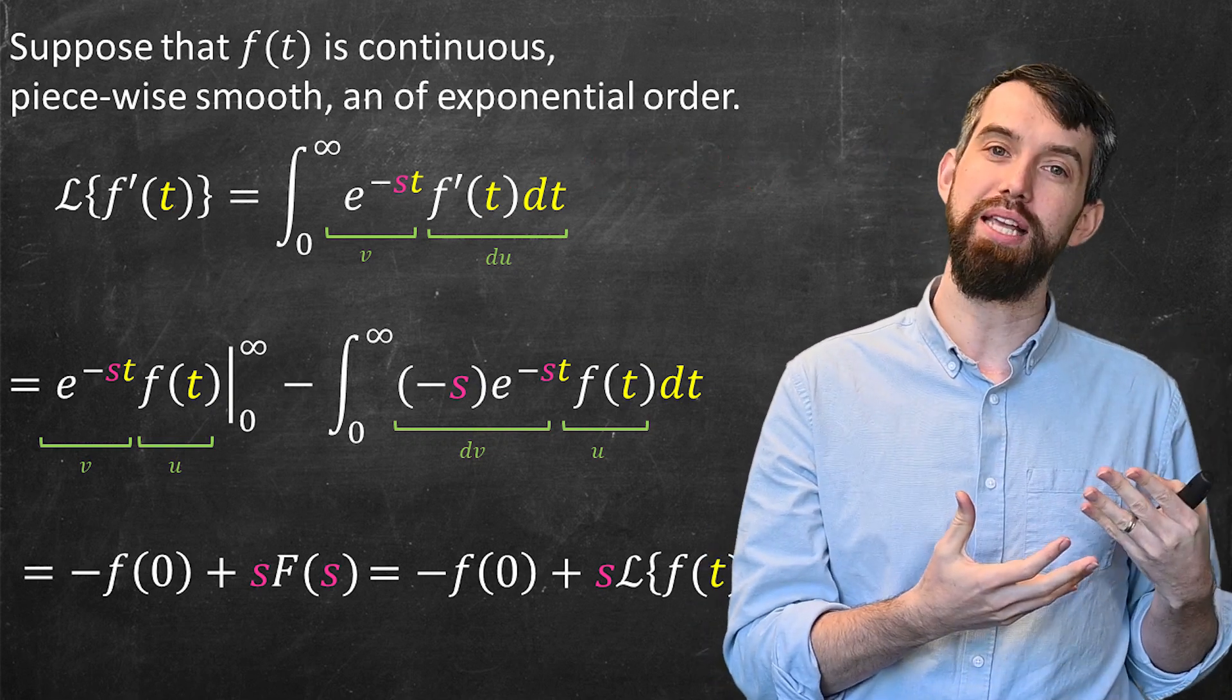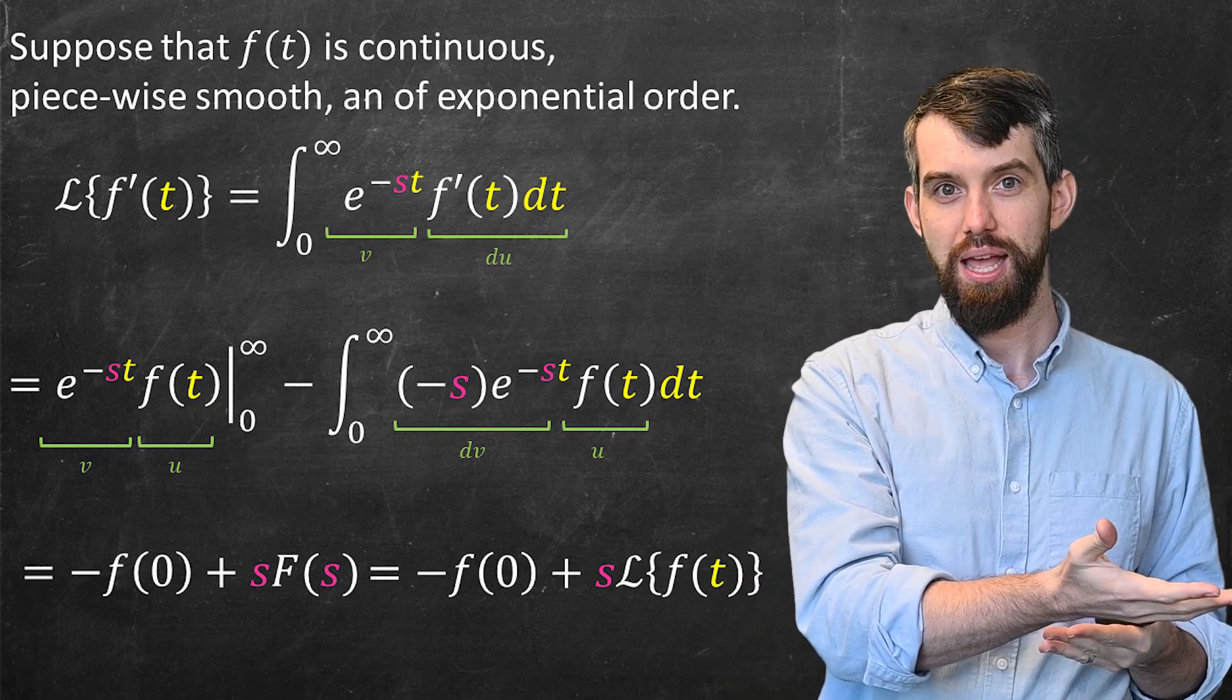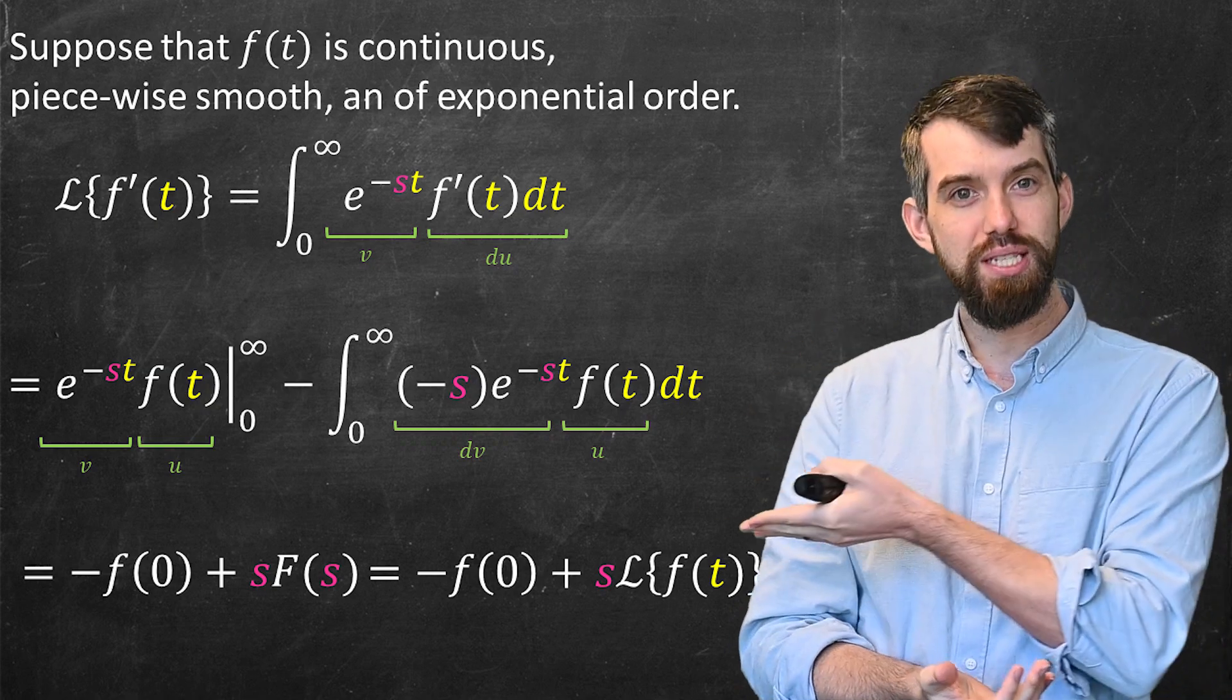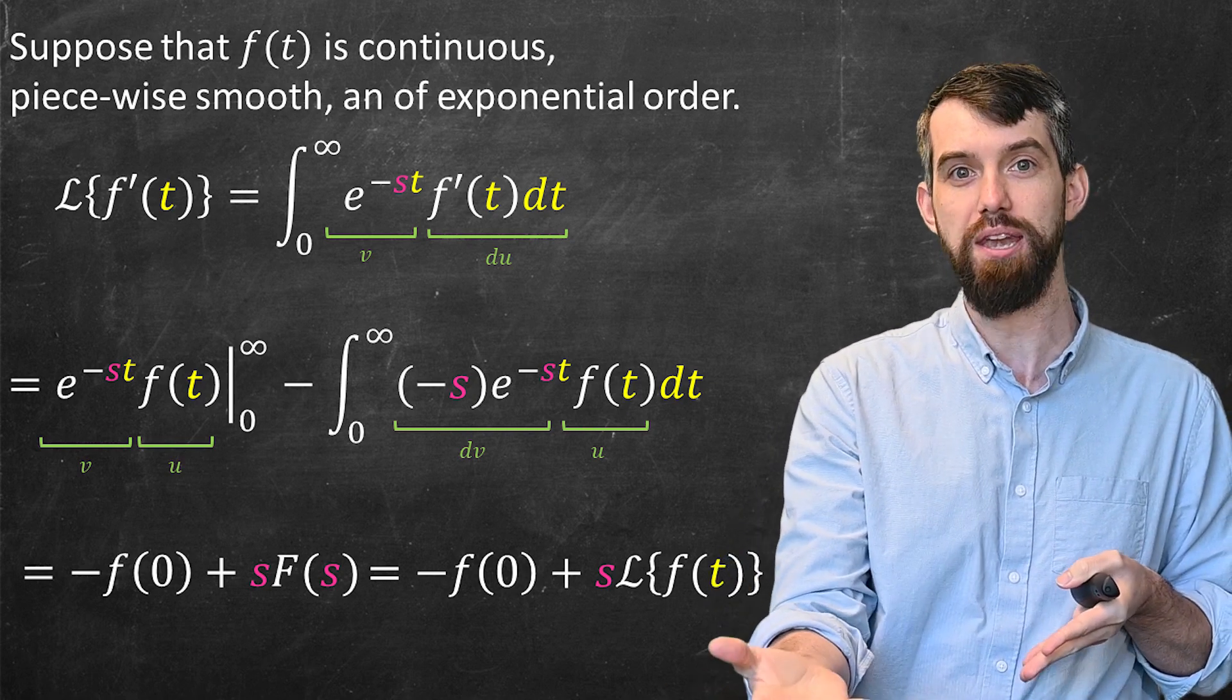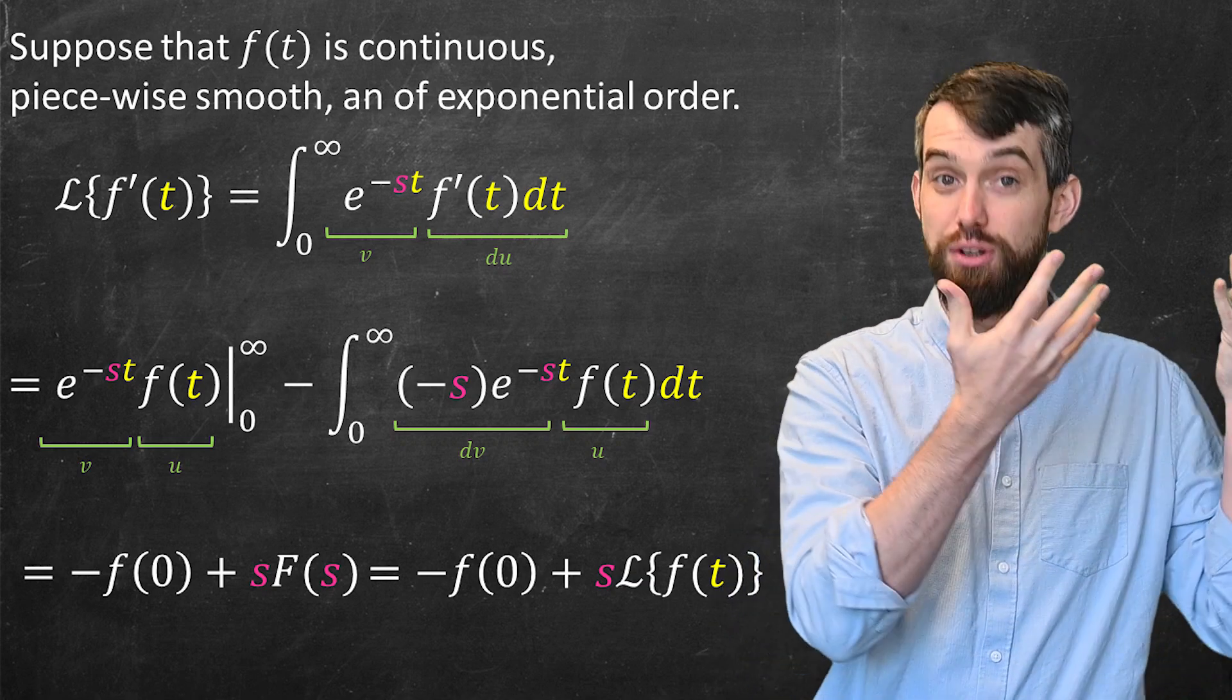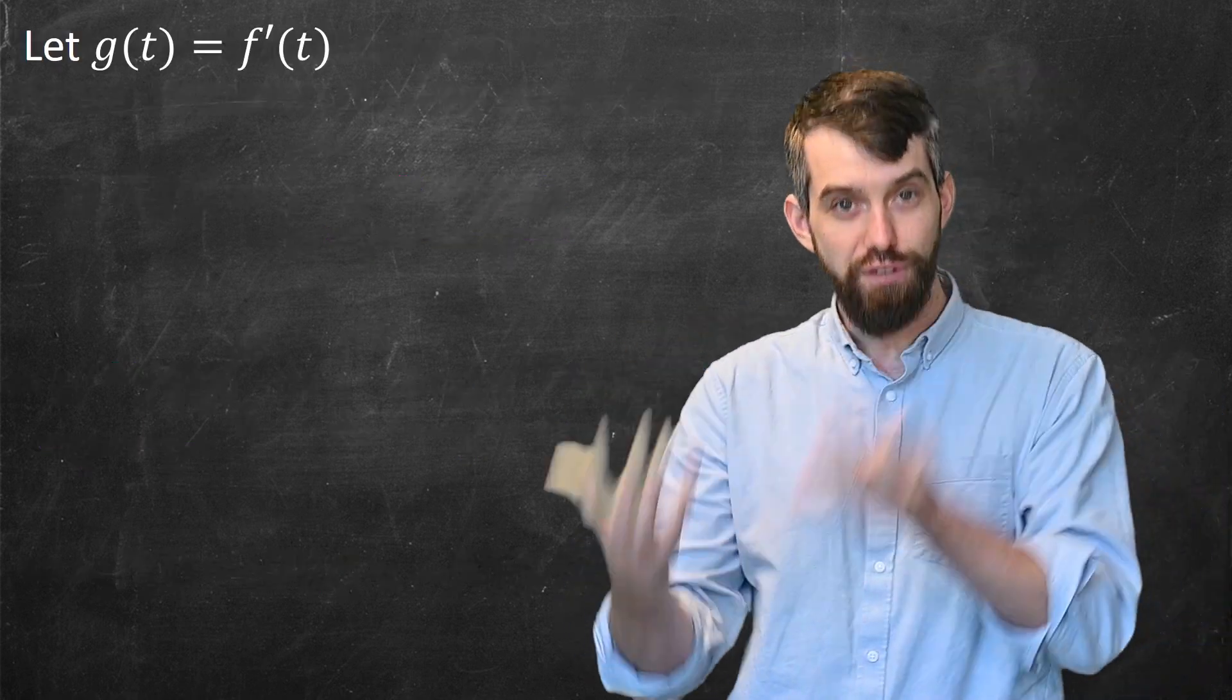What's particularly nice about this is that we have taken a claim about derivatives and replaced that with just the original function itself multiplied by a variable and added by a constant. But we've gotten rid of derivatives on the right side of this expression. That is going to be particularly useful to us when we apply the Laplace transform to a differential equation and try to convert it to an algebraic one.